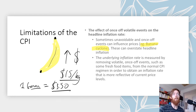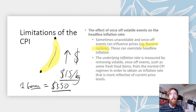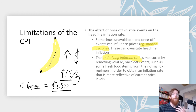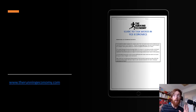To address this, we use the underlying inflation rate, which is measured by removing these volatile once-off events — such as certain fresh food items — from the normal CPI regimen, to gain an inflation rate more reflective of current price levels. For example, the bushfires drove up prices of some fruit, vegetables, and other goods; removing that effect gives a more accurate picture of genuine price changes, which is why the underlying rate is preferred in those cases.